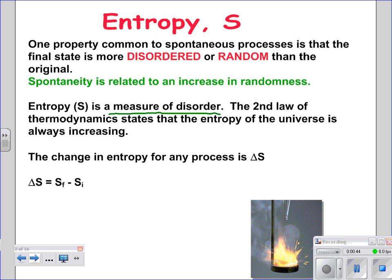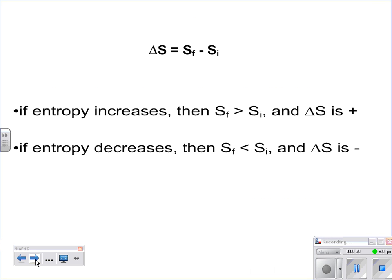So if we're talking about a change in entropy, remember a change in anything is always going to be final minus initial. So this is what you need to know: if entropy is increasing, we say that delta S is a positive value, and if it's decreasing, we say it's a negative value.